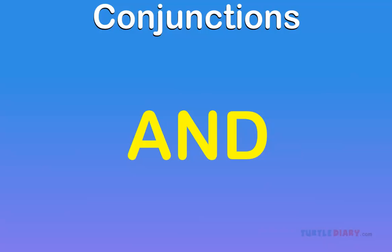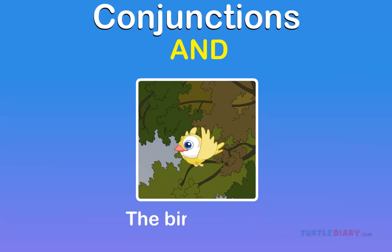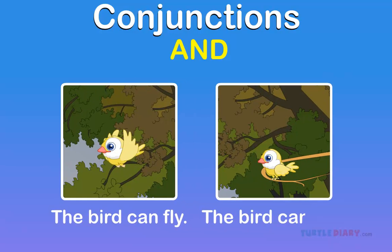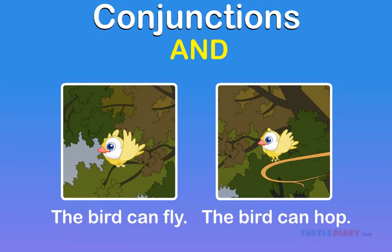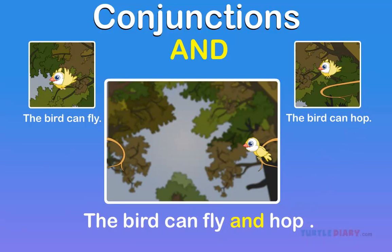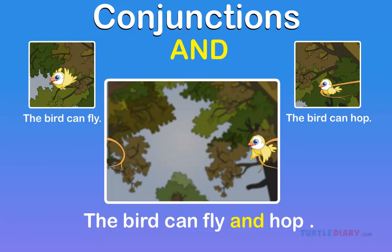And. 'And' is a connecting word that tells you more. The bird can fly. The bird can hop. The bird can fly and hop. Here, 'and' is used to join the words fly and hop, and tells us the bird can fly as well as hop.